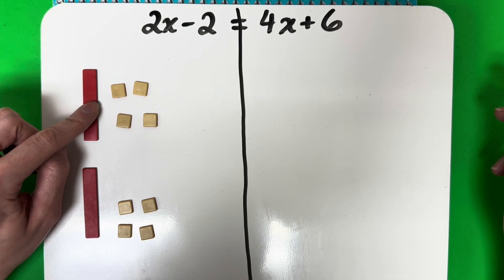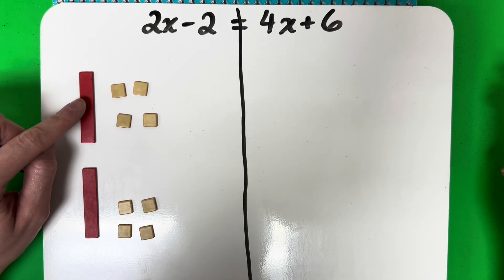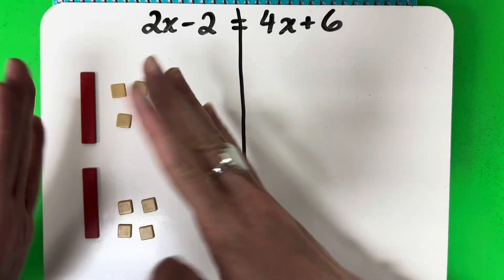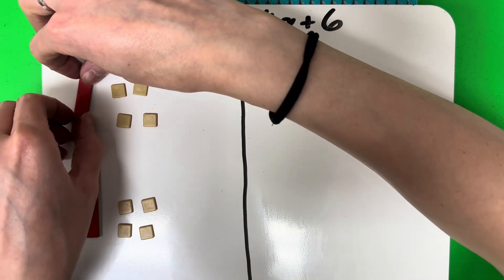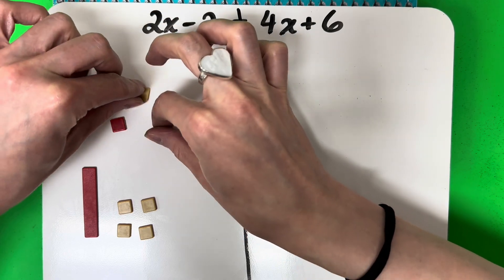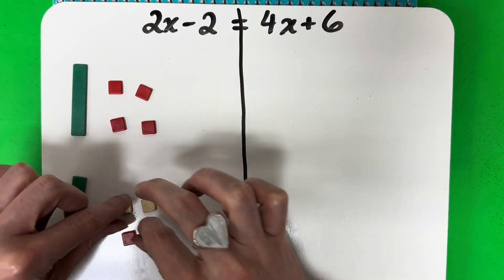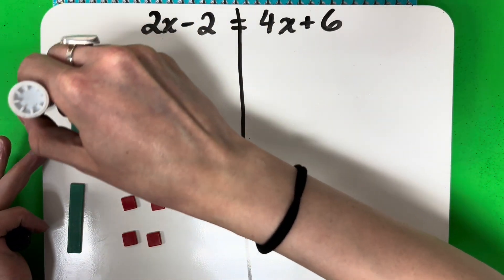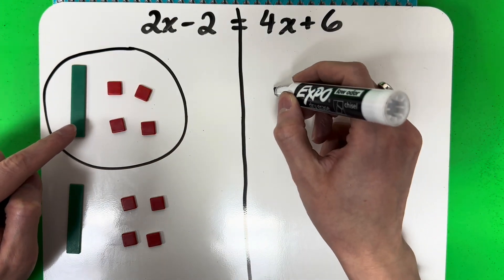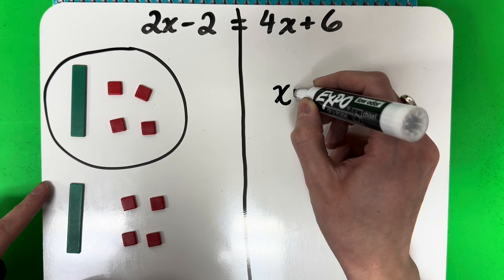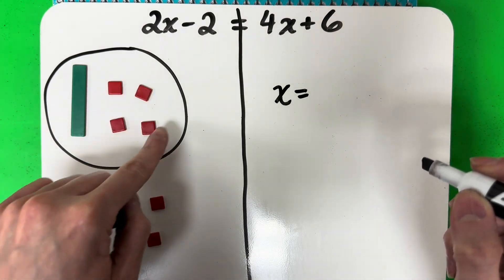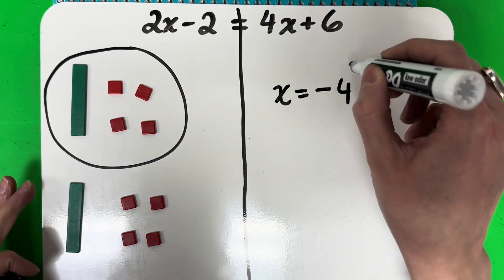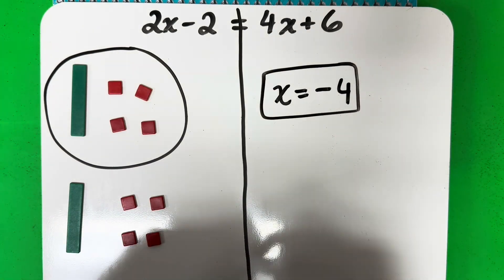There's one more thing I need to do — I cannot have a red rectangle. I cannot have a negative x; I need them to be positive. So how you make it positive is you just flip everything. So I'm going to flip that, and flip everything. So basically, this right here is your answer: x equals negative 4, because one rectangle gets negative 1, 2, 3, 4 squares — the red side means negative. The answer is x equals negative 4.